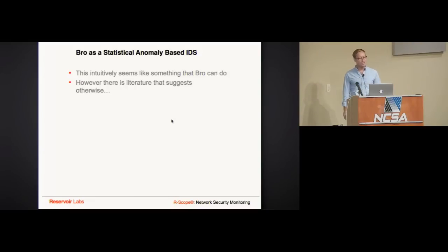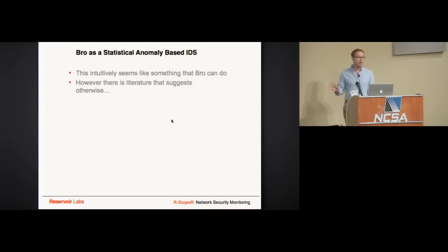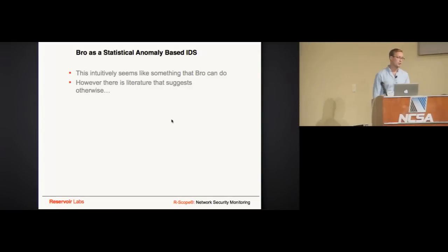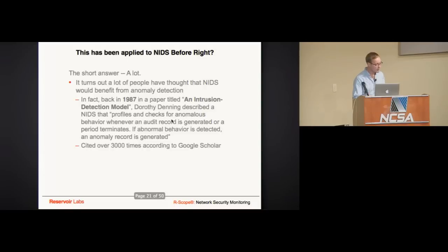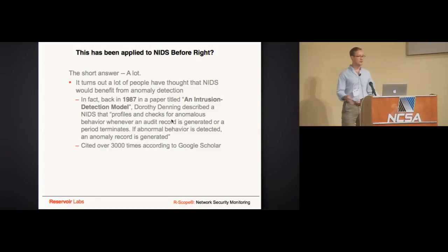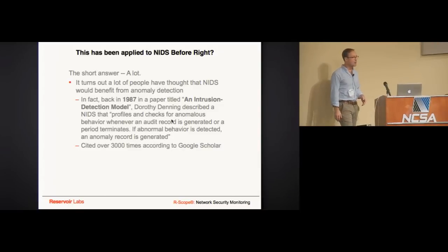Bro as a statistical anomaly-based IDS — Bro intuitively seems like it could do this. Bro has the ability to do mathematical operations and has the SumStats framework, an API for doing statistics and clustering. However, the literature suggests otherwise. Customers often say, 'I want to baseline what's normal and identify what's not normal,' and I started thinking about whether this could be done in a stats framework.